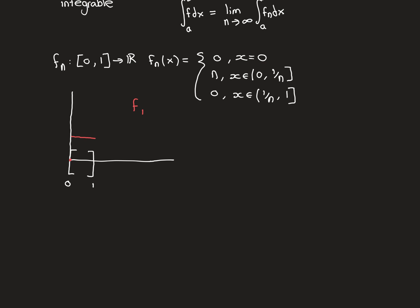I've drawn a picture with the first one, f1. Here's my closed interval [0,1]. Putting n=1: 0 is mapped onto 0. Then it's going from 0 to 1/1, which is all the way up to 1, and it maps onto n=1. So it's going to be 1 on the whole of the rest of the domain. Everything apart from 0 is going to be mapped onto 1. So this is the function f1 in the sequence.